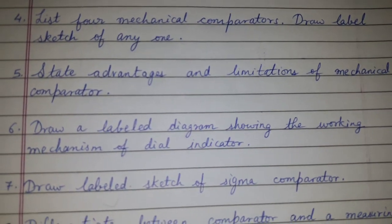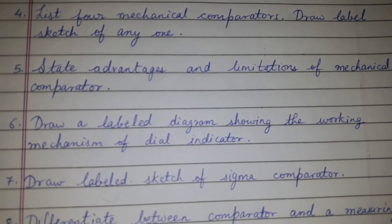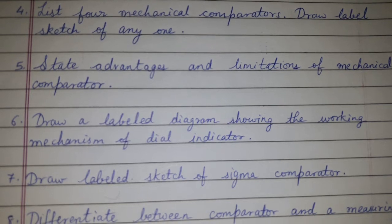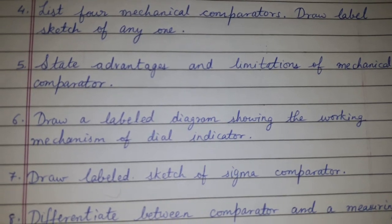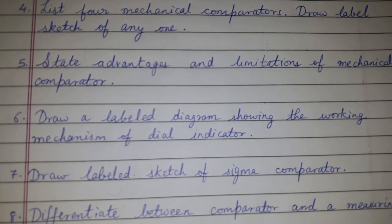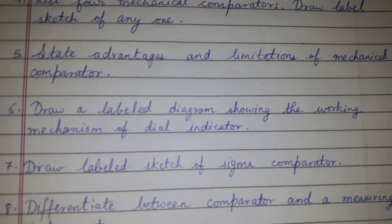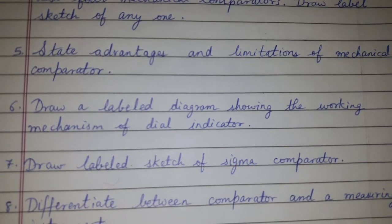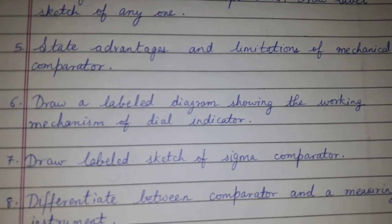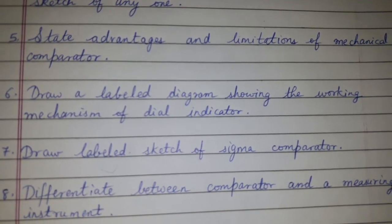Draw a labeled diagram showing the working mechanism of a dial indicator, which is one type of mechanical comparator. Also draw a labeled sketch of a sigma comparator, which is also a mechanical comparator.